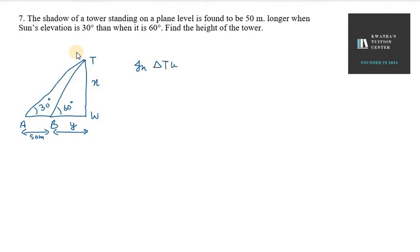In triangle TWB, tan 60 - because it is perpendicular and base known - will be perpendicular over base. That will be x over y. Tan 60 is under root 3, so under root 3 equals x over y.